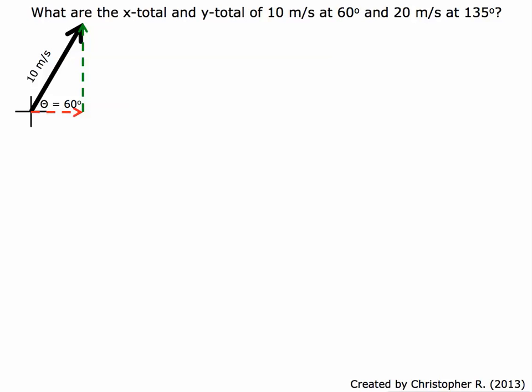This is an example of component totals. We're going to find the x and y totals when we have 10 meters per second at 60 degrees and 20 meters per second at 135 degrees.